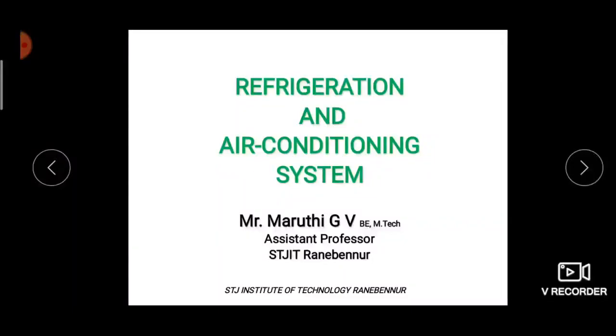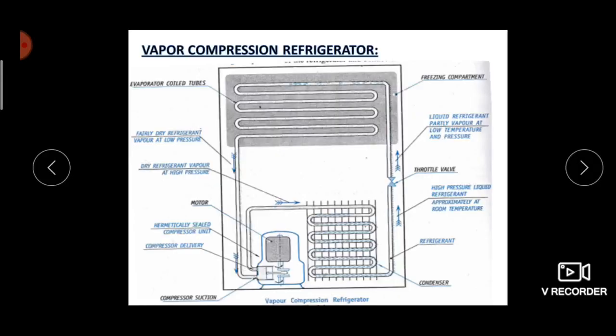Today I am going to explain a new topic: Vapor Compression Refrigerating System, or VCR system. The VCR system means vapors of the refrigerant will be compressed to a high pressure and circulated throughout the refrigeration cycle in order to get a refrigeration effect. That is why it is named the Vapor Compression Refrigerating System.